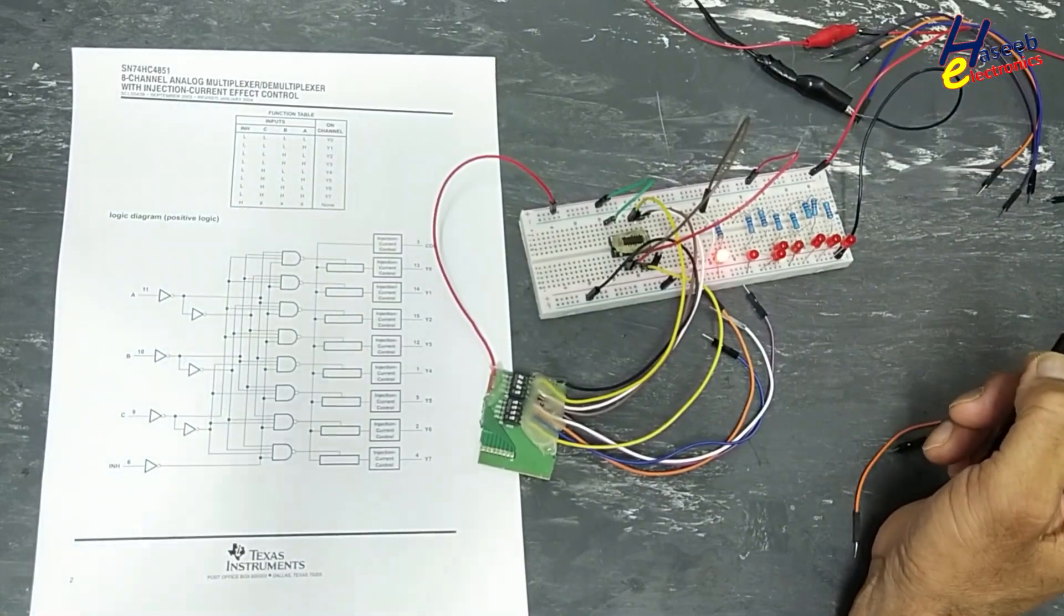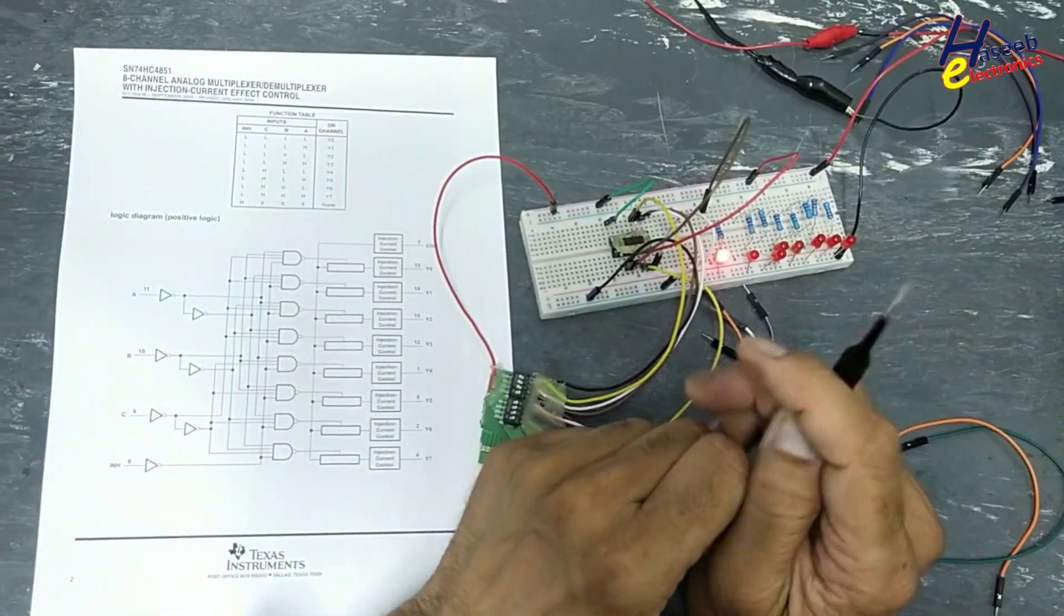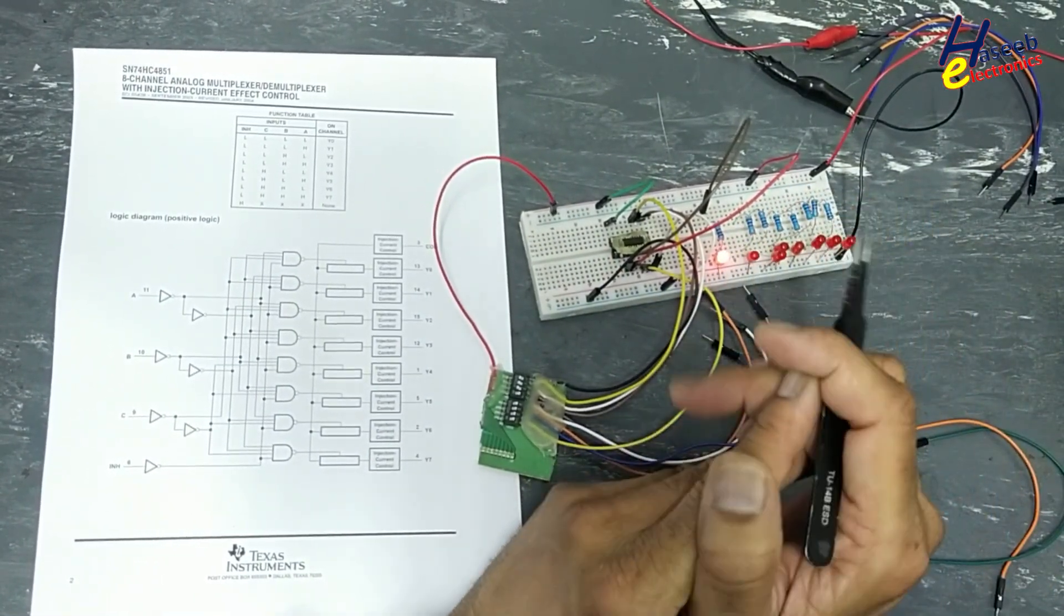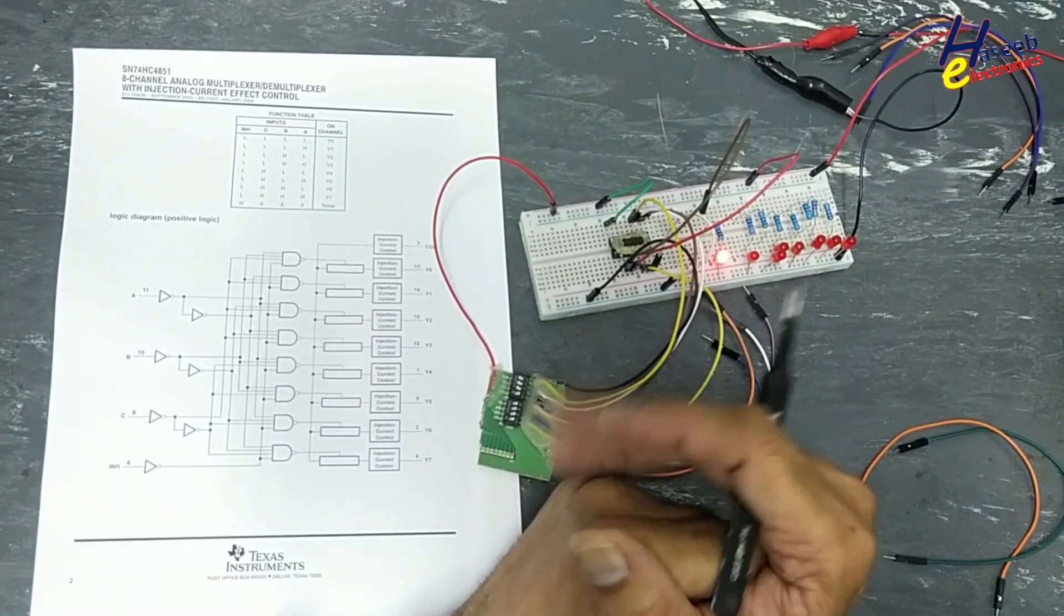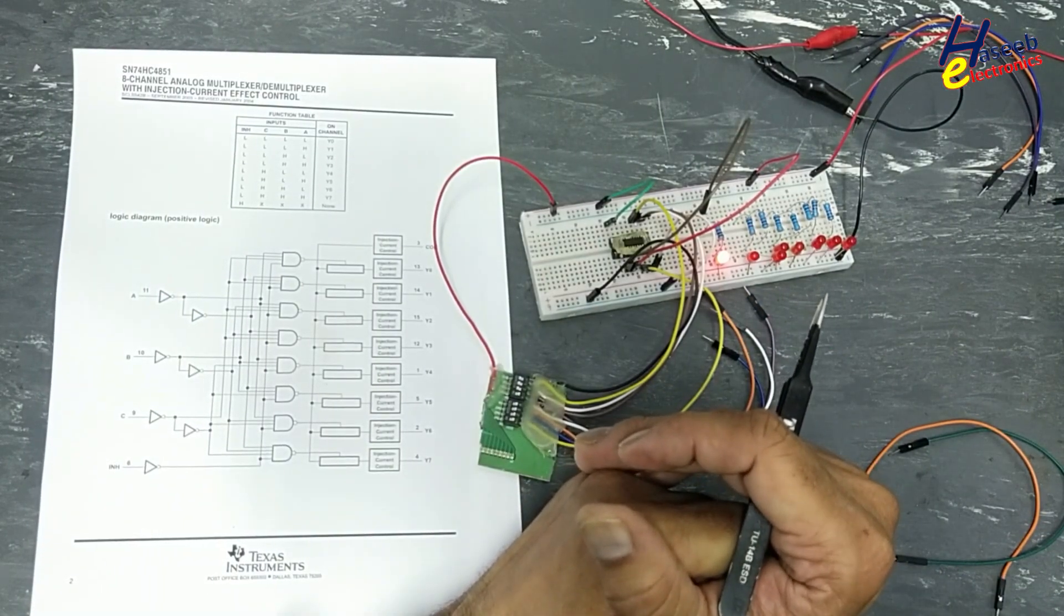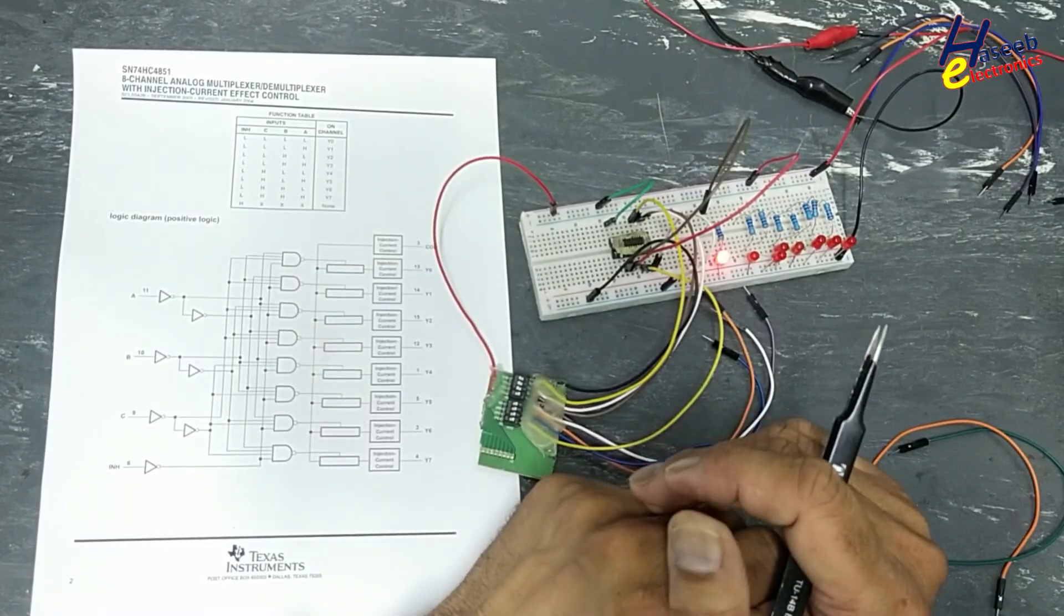This is the function of HC 4851, 8-channel analog multiplexer demultiplexer. If this video is informative, give a thumbs up. If you have any question, please write in the comments. Thanks for watching. Assalamualaikum warahmatullahi wabarakatuh.